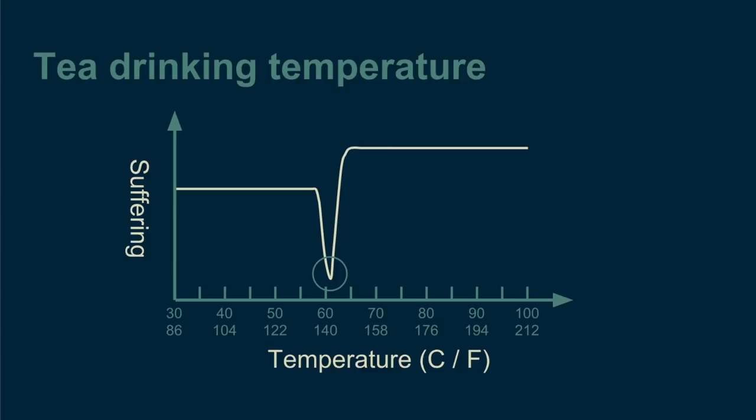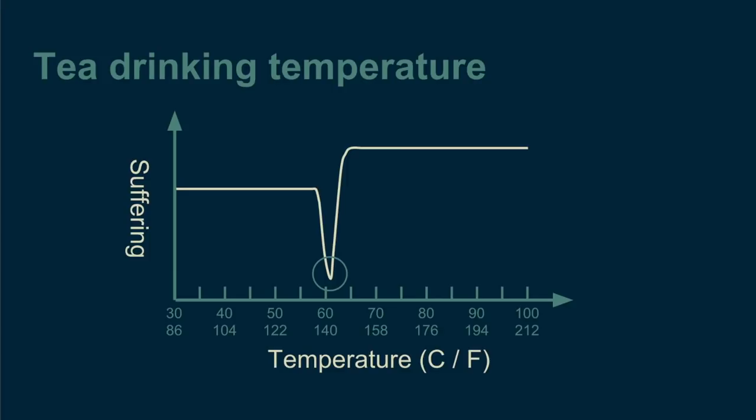All of these occur in real machine learning optimization problems. If we suspect that our tea satisfaction curve has any of these tricky characteristics, we can always fall back to exhaustive search. Unfortunately, exhaustive search takes an extremely long time for a lot of problems. But luckily for us, there's a middle ground.